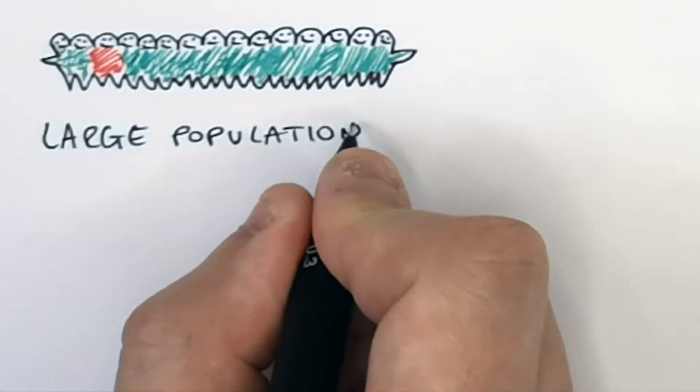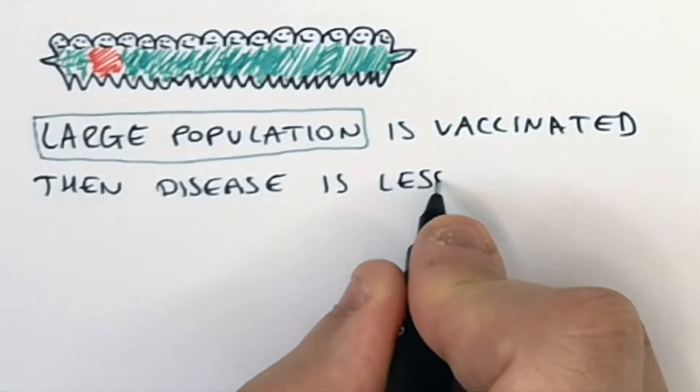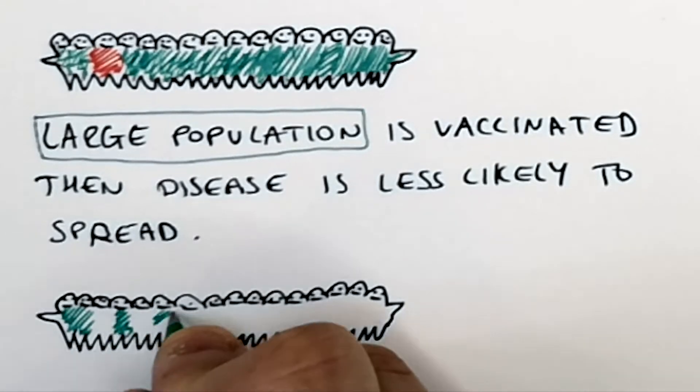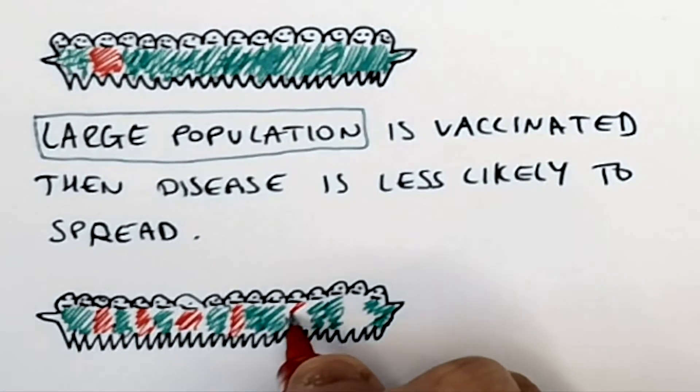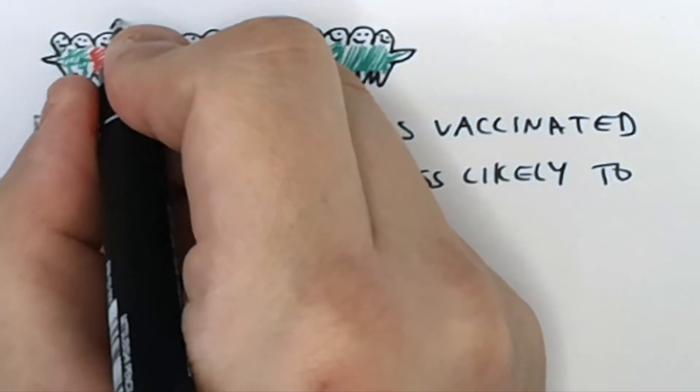So if a large population is vaccinated, the disease is less likely to spread. So in this diagram here, you can see that a far smaller percentage of the population have been vaccinated.